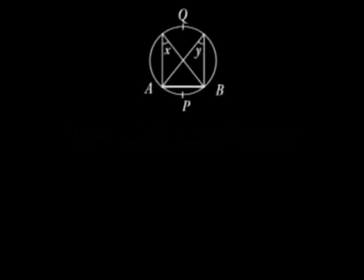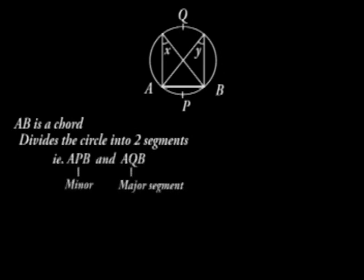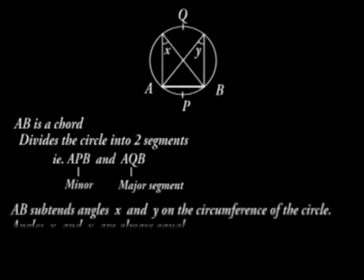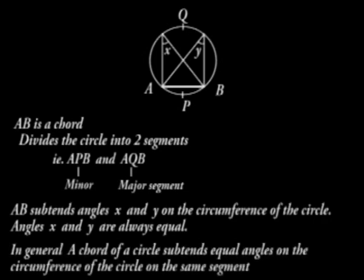Angles in the same segment. Consider the figure below. AB is a chord. It divides the circle into two segments, that is APB which is the minor segment, and AQB which is the major segment. AB subtends angles X and Y on the circumference of the circle. Angles X and Y are always equal. In general, a chord of a circle subtends equal angles on the circumference of the circle on the same segment.